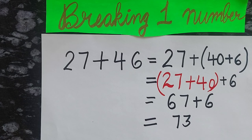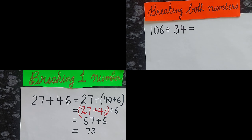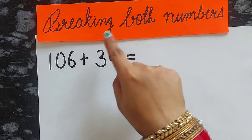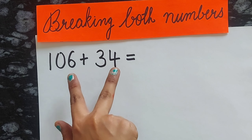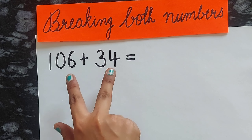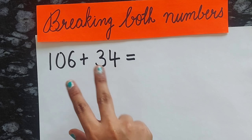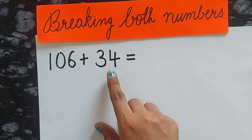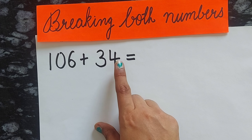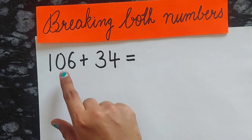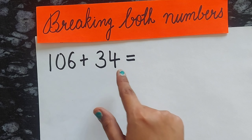Now let's learn the second method: breaking both numbers. In this method you have to break both numbers. Previously we just broke one number, but now we will break both numbers.